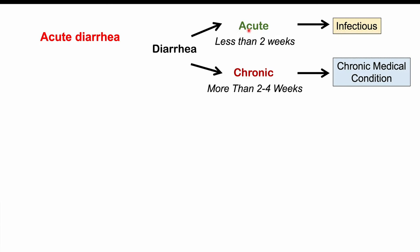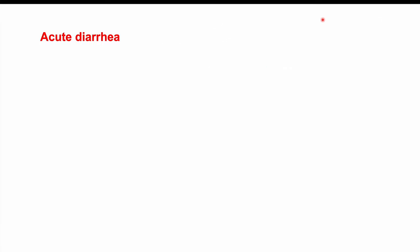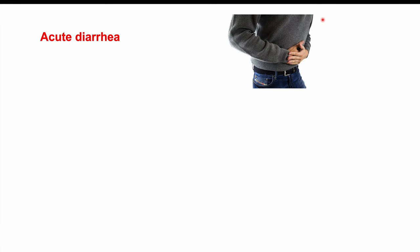Acute diarrhea less than two weeks is often infectious. What is characteristic with Shigella-associated diarrhea is that it can be watery or bloody — this is a key distinguishing feature compared to other types of infectious diarrhea.